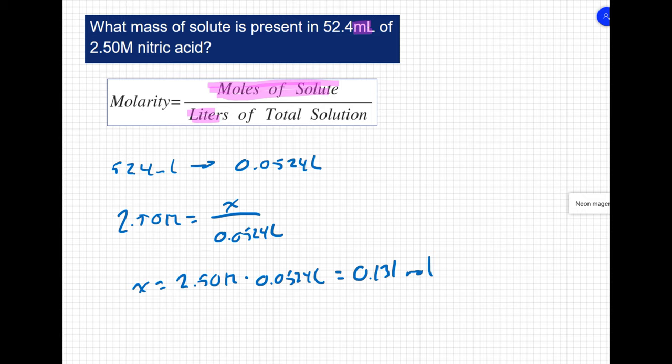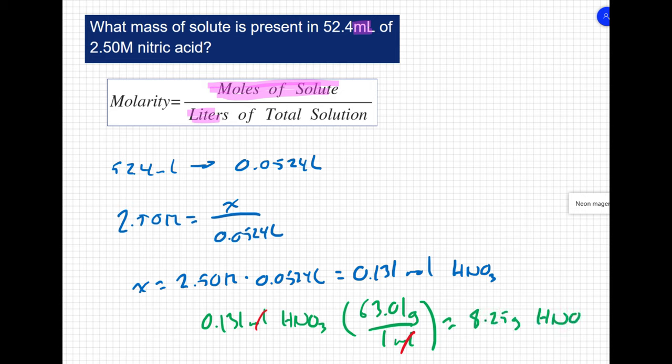Now my solute here is nitric acid, HNO3. So to answer this question, to get the mass of the solute, I'm going to take my 0.131 moles of HNO3 and multiply it by the molar mass. The molar mass of nitric acid is 63.01 grams for every one mole. Moles cancel out and I'm left with grams, which is good, and I end up getting 8.25 grams of HNO3.